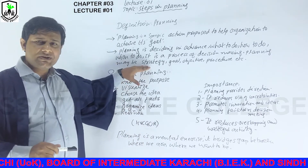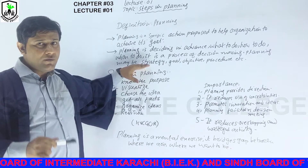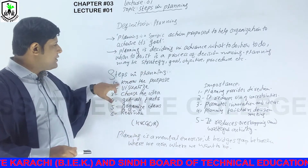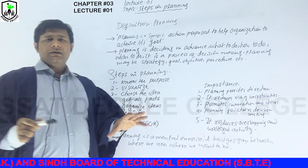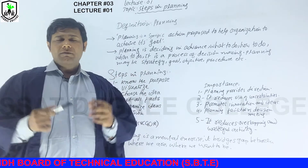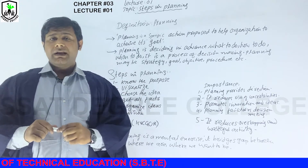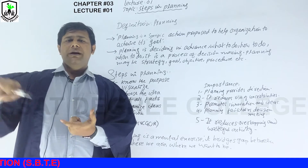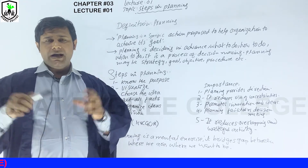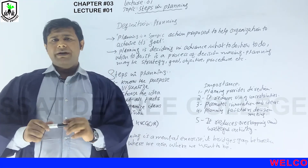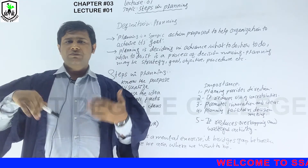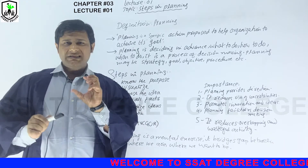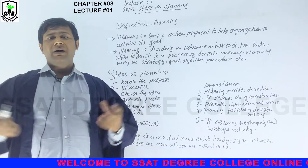Now there are steps in planning that we have to follow to achieve our goal. Number one: know the purpose. We have to think — for example, if Sandra is communicating with the receiver, Sandra has to think about what the topic of that planning is, what sort of business we are going to start, what we are going to do. So we have to plan something; we have a purpose in our mind, we have an idea in our mind.